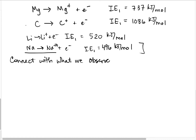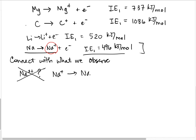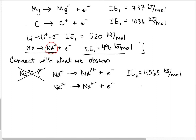We see Na⁺, but do we ever see Na²⁺? We sure don't. To remove the first electron from sodium costs 496 kJ/mol. To take a second electron away from the sodium ion costs 4,563 kJ/mol, and removing a third costs 6,913 kJ/mol. So do we ever see Na²⁺ and Na³⁺? We do not.